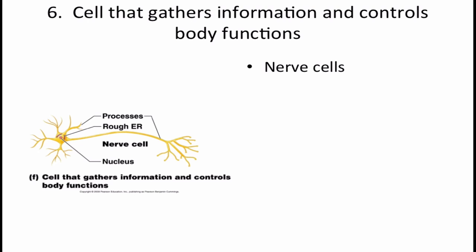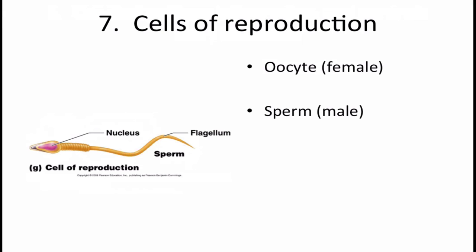Next are the cells that gather information and control body function — these are nerve cells, conducting signals that are interpreted by the brain and spinal cord and then eliciting a response. The last type of specialized cells are the cells of reproduction: the oocyte, which is the female reproductive cell, and sperm, the male reproductive cell. That gives you an idea of how varied and diverse cells really are.